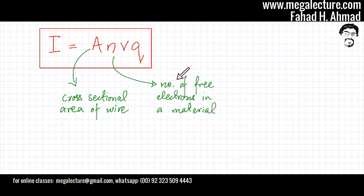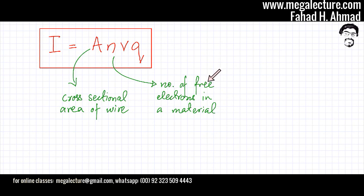N is the number of free electrons in a material. These are the electrons that are basically driving the current or are available for conducting electricity. Similarly, V represents the drift velocity of the electrons, or the speed at which an average electron is traveling.